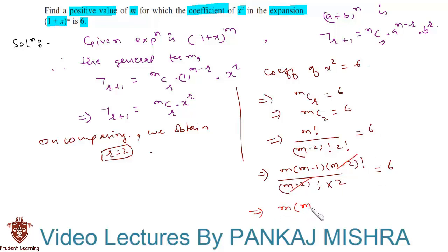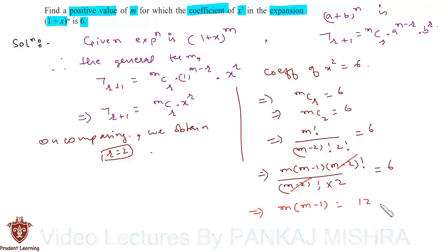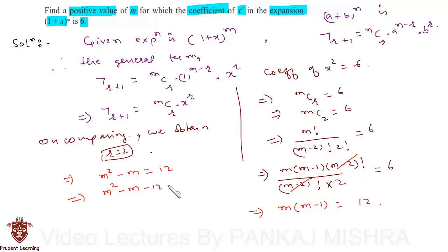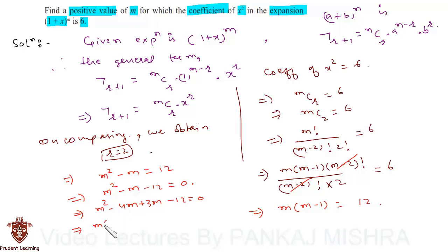This means we have m² - m = 12, or we can write it as m² - m - 12 = 0. We can factor this as m² - 4m + 3m - 12 = 0. Taking m common from the first two terms gives m(m-4), and taking 3 common from the last two terms gives 3(m-4) = 0.